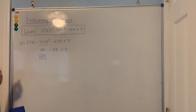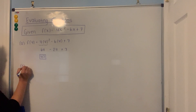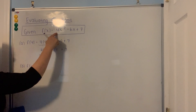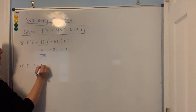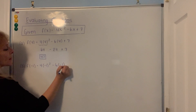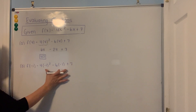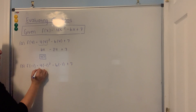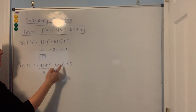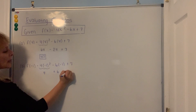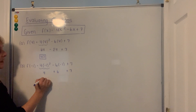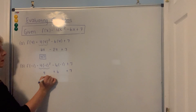In part b, it says find f of negative 1, which means fill in a negative 1 for all the x's that appear on the right hand side. So it's 4 times negative 1 squared minus 6 times negative 1 plus 7. Negative 1 times negative 1 is 1, times the coefficient is 4. Negative 6 times negative 1 is positive 6, and then there's a plus 7. So 4 plus 6 is 10, and 7 more gives you 17 for the answer.